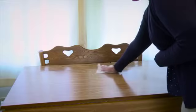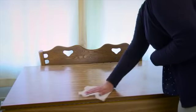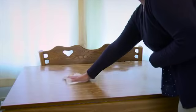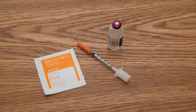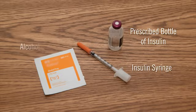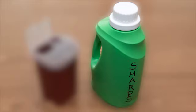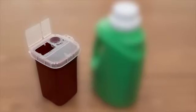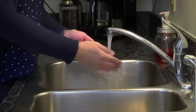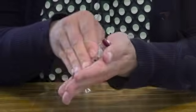Here are the steps you will take. Select a clean, dry work area. The supplies you will need include the prescribed bottle of insulin, an insulin syringe, alcohol wipes, and a container for used equipment. You can use a hard plastic container with a screw-on or tight lid, or a commercial sharps container.